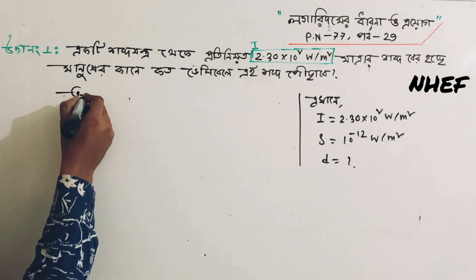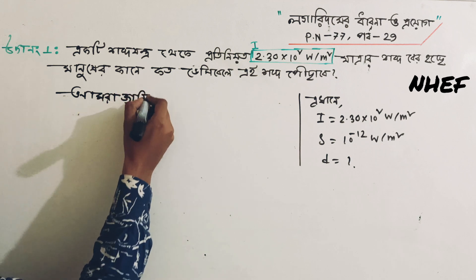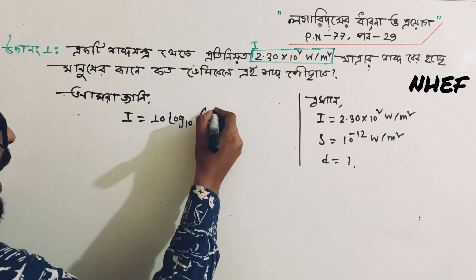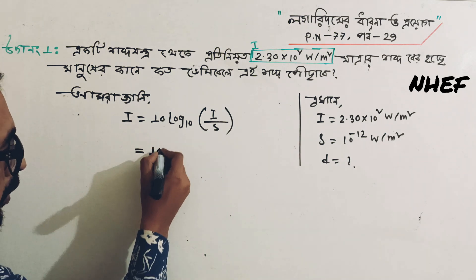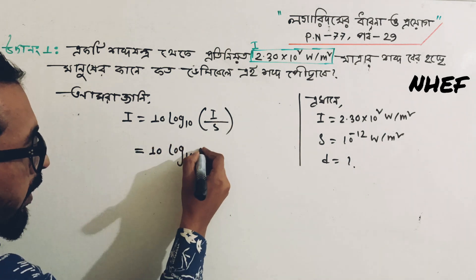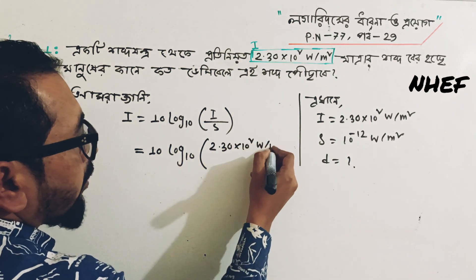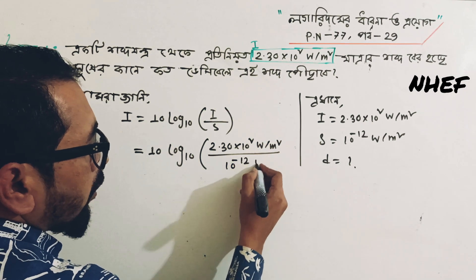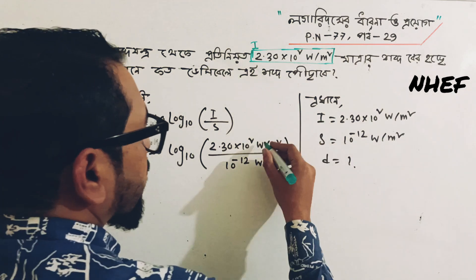D is equal to 10 log base 10 of I divided by I₀. So D equals 10 log base 10 of I divided by I₀ — 10 log base 10 of 2.30 × 10 to the power 2 watt per meter square, divided by 10 to the power minus 12 watt per meter square. The watt per meter square cancels out.